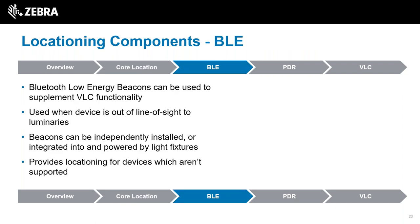BLE - Bluetooth Low Energy - allows us to install beacons in the store to supplement the VLC functionality. They're used when the device can't see the luminaries, for example if there's natural light interference. The interesting thing with this solution is that the beacons can also be installed directly into the luminaries and powered by them, so you wouldn't have to go around installing them independently. BLE also provides location for devices which aren't supported - those without a front-facing camera or whose architecture won't allow the library to run.